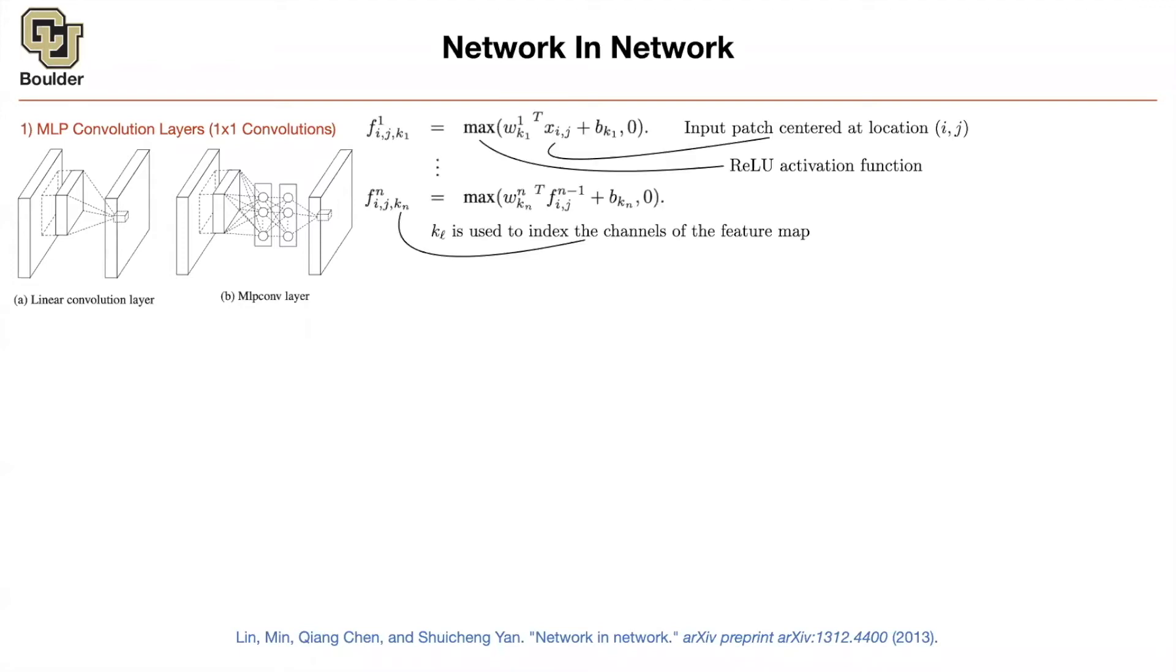And how does it work? You have an input batch centered at location i and j. So this is your input batch centered at location i and j. And then you put everything inside the vector. So that input batch, you're putting it inside a vector. You're flattening it. And then correspondingly, you're going to have a bunch of weights. That's your filter.